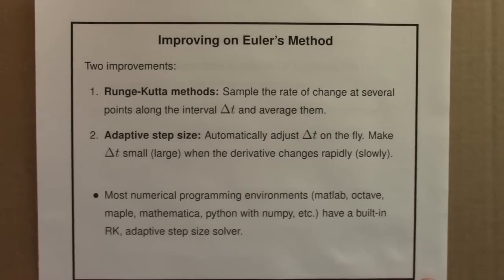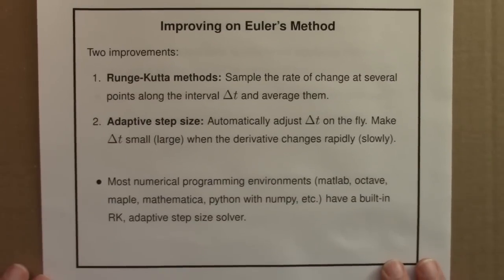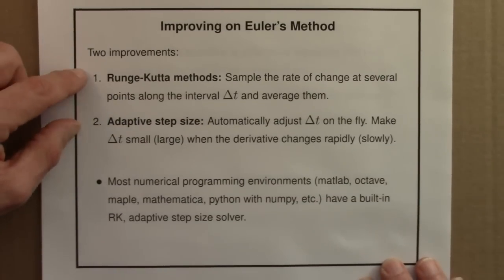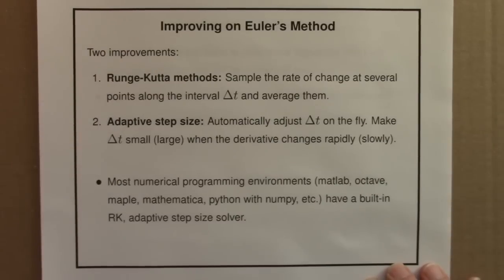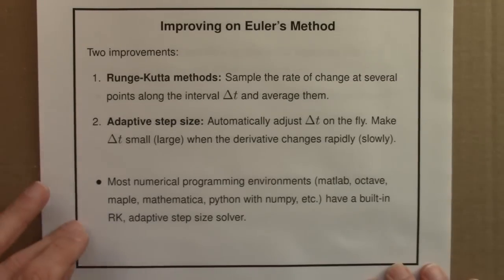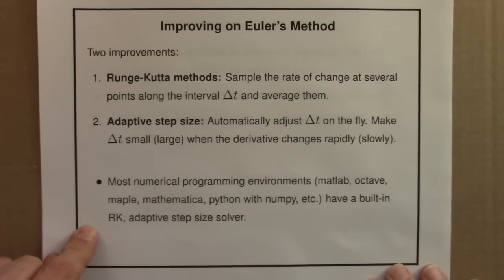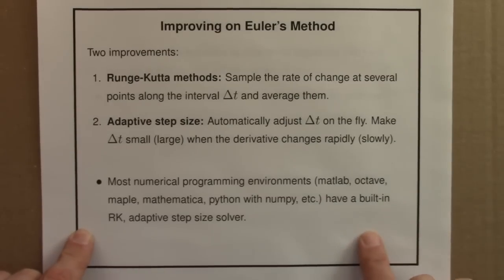In any event, the standard way to improve on Euler's method is to do these two things: some type of Runge-Kutta method, and some type of adaptive step size. Almost all numerical programming environments — Matlab, Octave, Maple, Mathematica, Python — have some sort of built-in Runge-Kutta adaptive step size solver. Perhaps some of you who have experience with these different tools and have solved differential equations before can post some examples of how to use these different built-in functions.